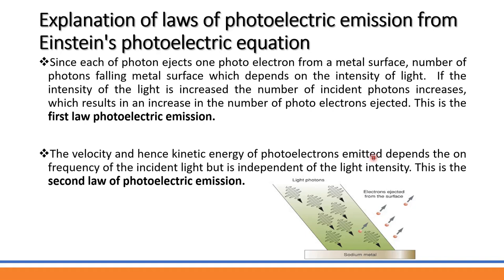Now, how do we explain Einstein's photoelectric equation in terms of the laws? When the intensity increases, the number of photons increases — but the energy per photon remains the same, since energy depends on frequency, not intensity. When frequency increases, the energy of each photon increases. The number of photoelectrons ejected from the metal surface is directly proportional to the intensity of the incident light.